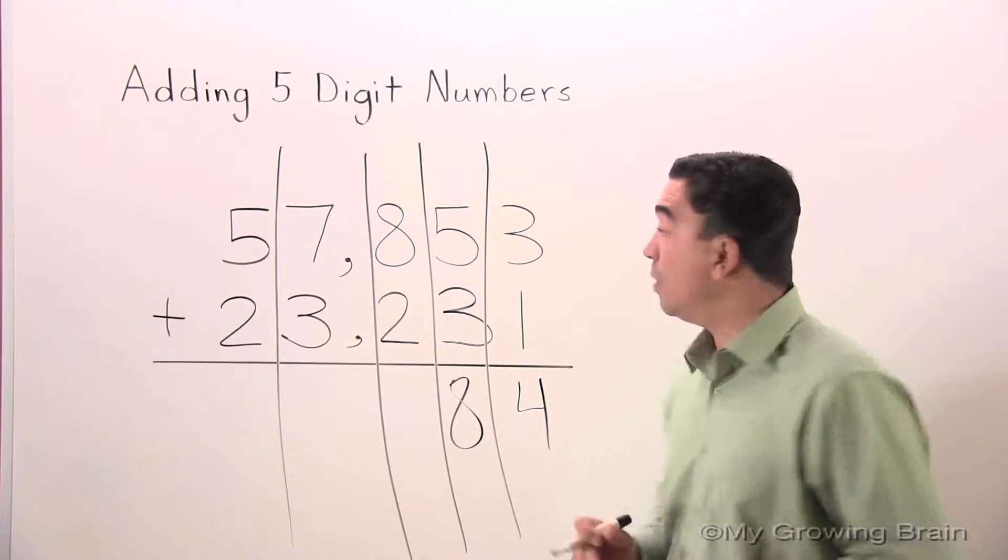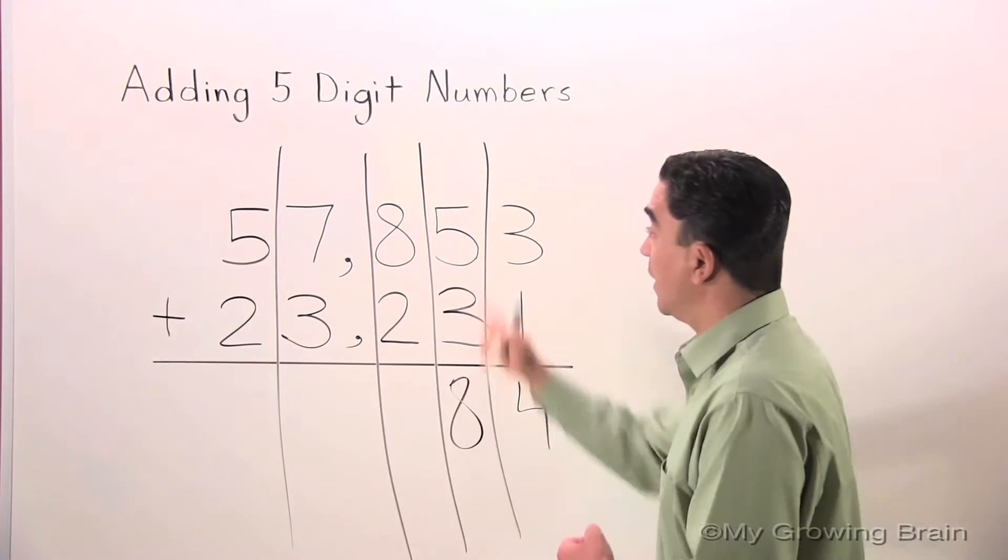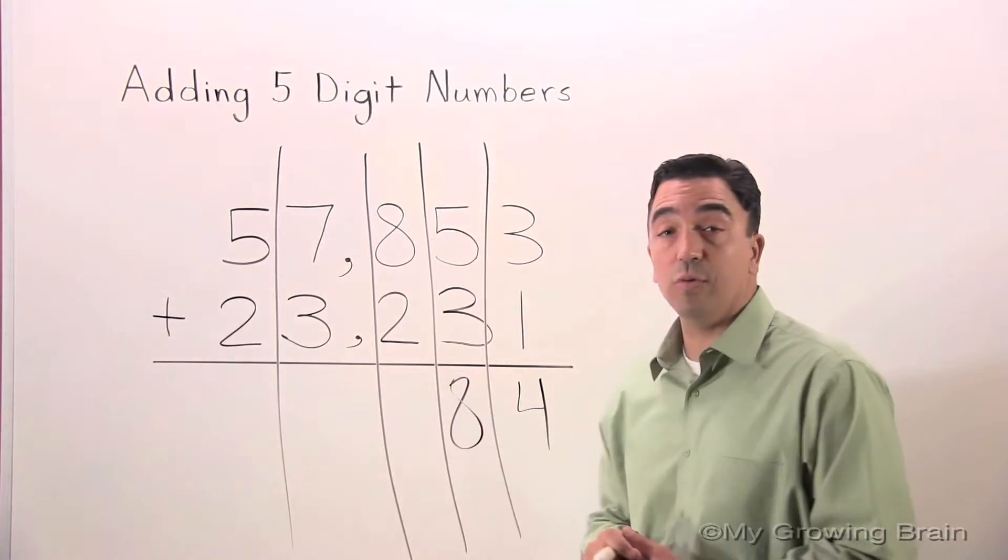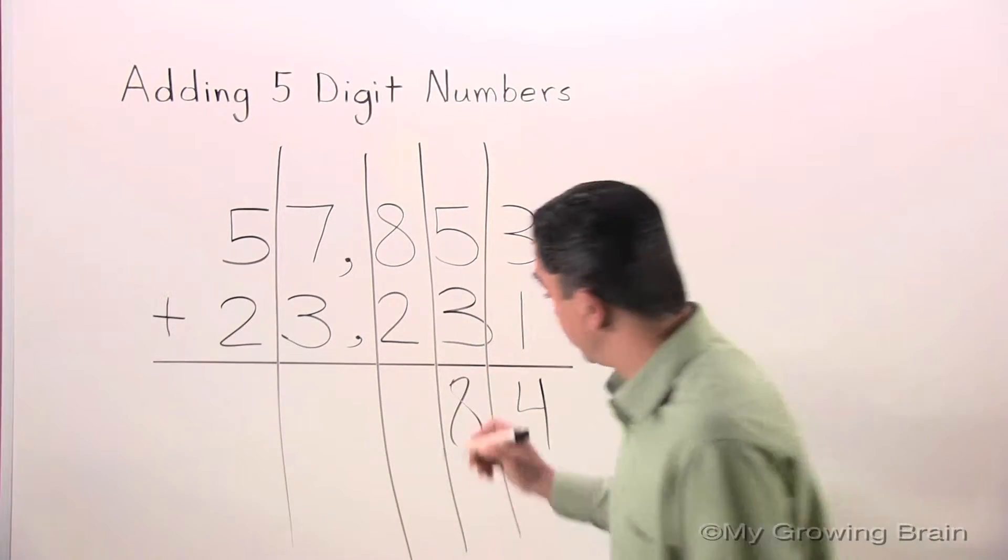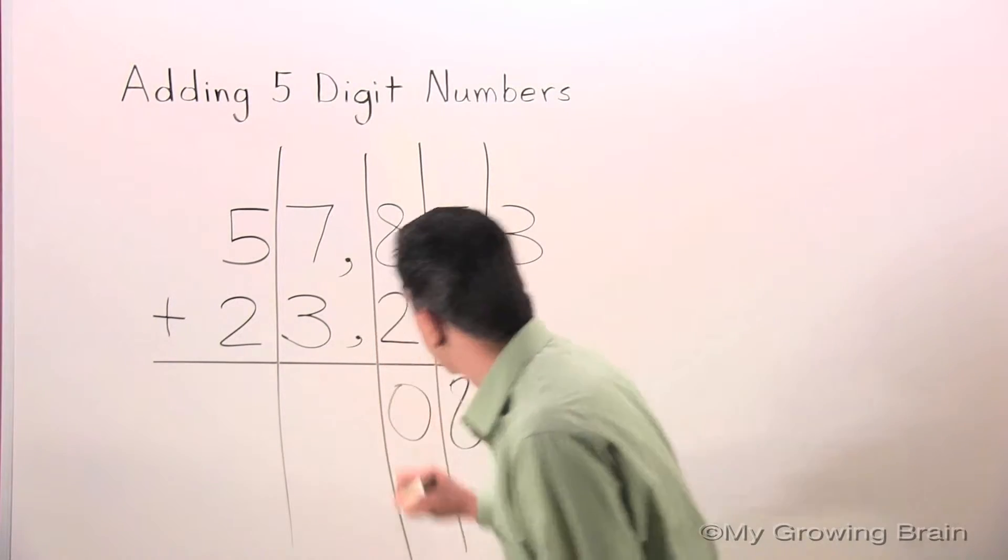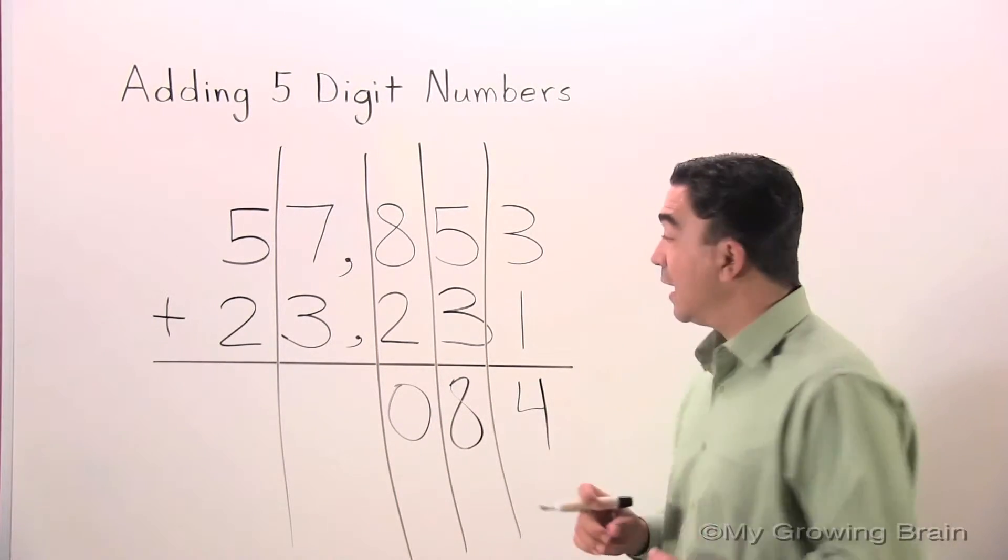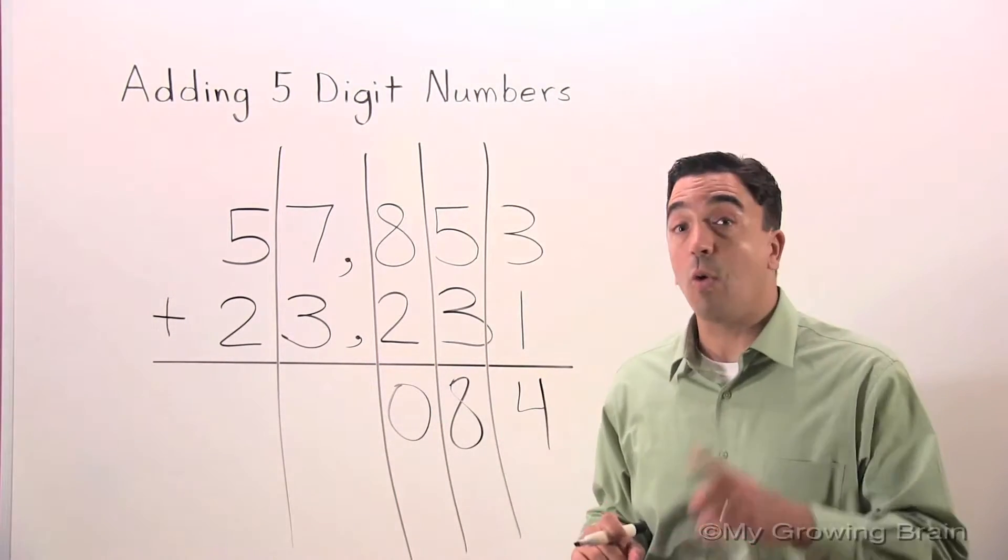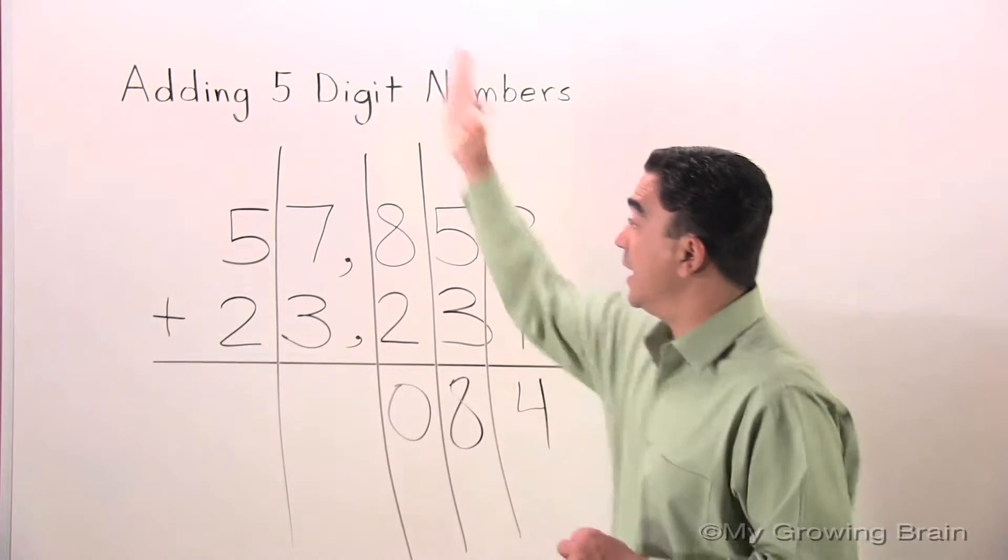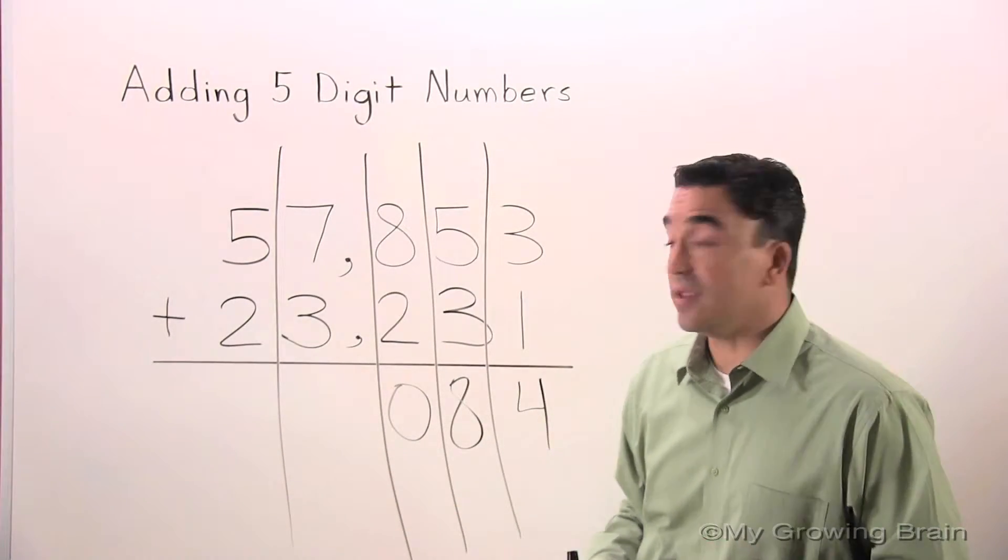Now we'll move over to the hundreds place. Eight plus two is ten. I will carry the one or regroup the one into the thousands place.